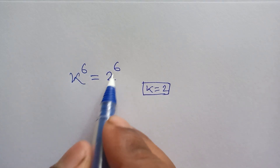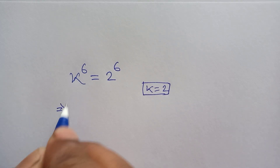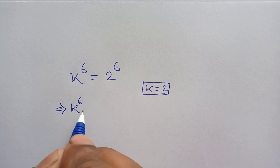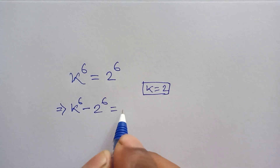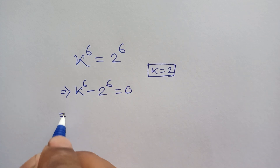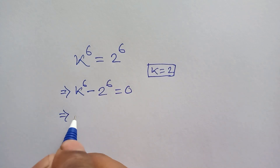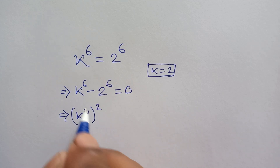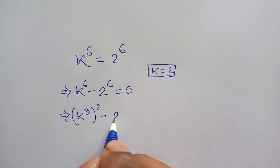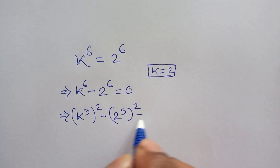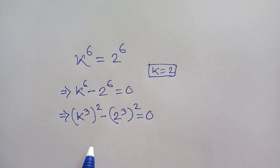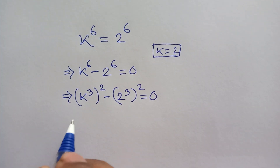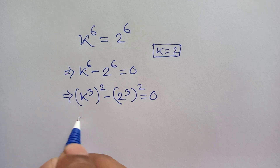Let's try to solve this equation. We have k to the power 6 is equal to 2 to the power 6. First, move 2 to the power 6 to the left side, so it becomes k to the power 6 minus 2 to the power 6 is equal to 0. This k to the power 6 can be written as k to the power 3, whole squared, and 2 to the power 6 as 2 to the power 3, whole squared.